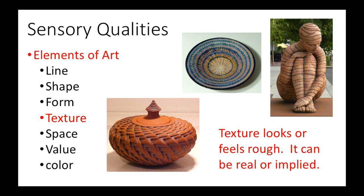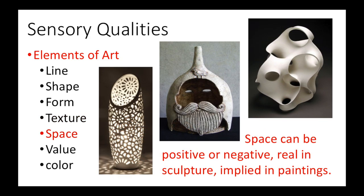Texture is a surface quality that looks or feels rough. If you hold a pot in your hands and it feels rough, this would be an example of real texture. A plate with a very busy design may feel smooth to the touch but has what we call visual texture. The element of space is comprised of both positive and negative space. An actual object represents positive space, while the air around or within that object represents negative space. In a painting or drawing, the concept of space is implied; in sculpture, it can be both implied and real.